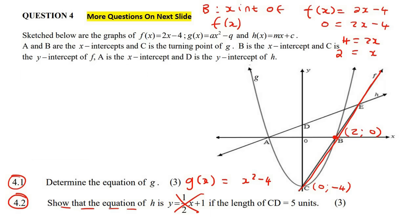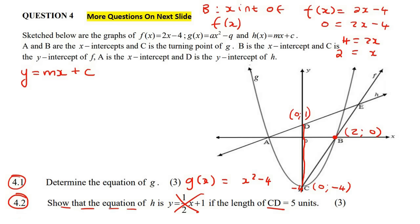They tell us that the length of CD is five, so this length is five. If this C value is minus four, and you go up by four places you get to here, then we go up another one place because they said the total distance must be five. So that coordinate would be one: X equals zero and Y equals one. If you go from minus four up to one, that is a total length of five. Now it's easy to get A because we have the parabola — we know this parabola has an X-intercept at two, so this X-intercept would just be negative two.